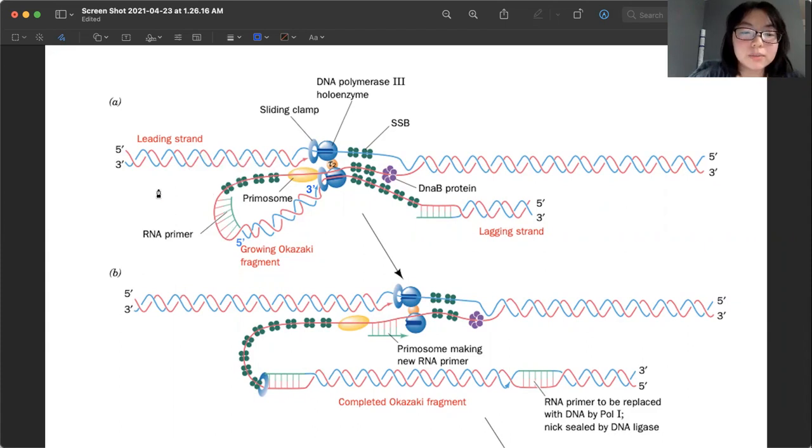And so let's say that this purple protein right here, this is the helicase, and that will unwind the DNA, like the parent strands.